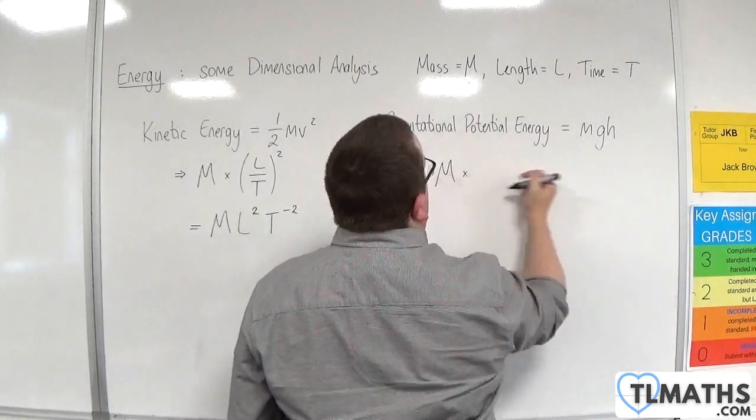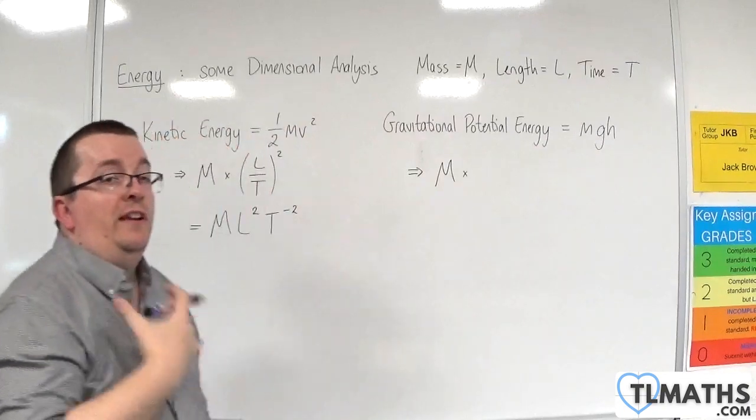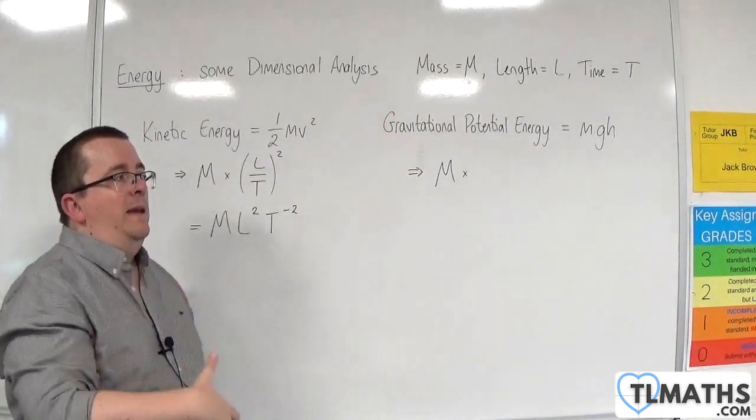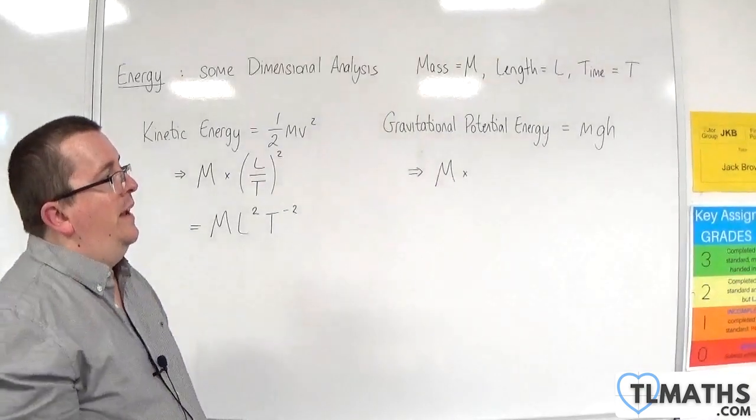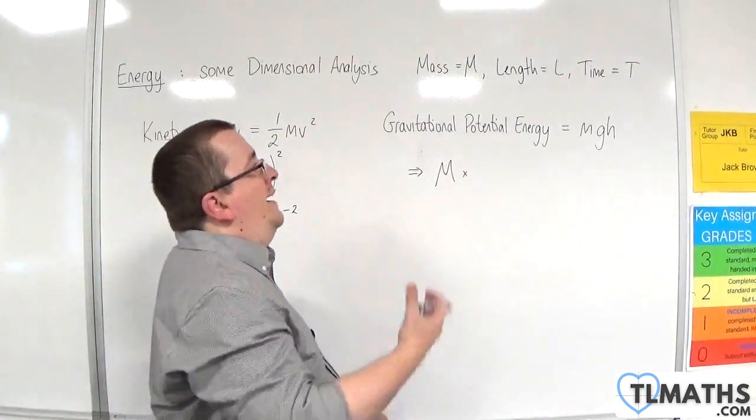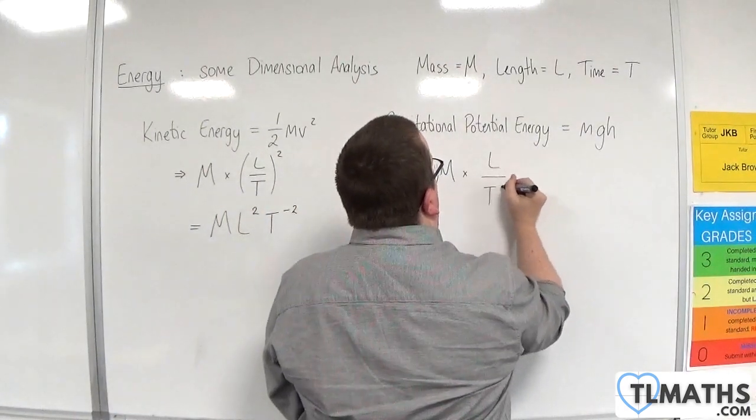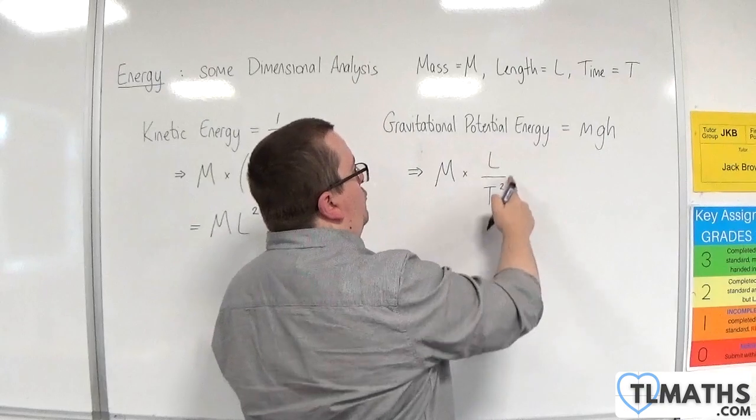Then we have G, which is an acceleration. Now, acceleration is meters per second per second, in this case. So that is length over time squared. So length over time squared. That is your acceleration.